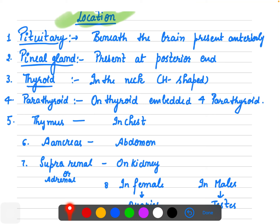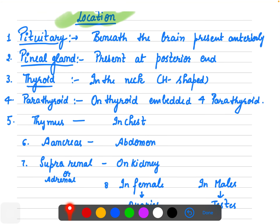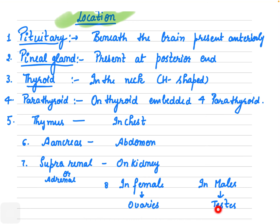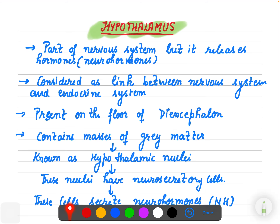Quick revision of gland locations: pituitary — beneath brain, anterior side. Pineal — 'P' for pineal, 'P' for posterior side. Thyroid — H-shape, neck region. Parathyroid — embedded inside thyroid, four in number. Thymus — chest. Pancreas — abdomen. Suprarenal/adrenal — on kidneys. Females have ovaries; males have testes.